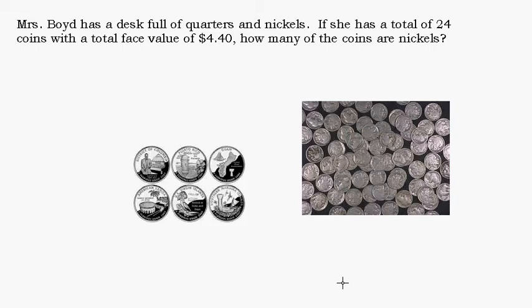Before we jump into this too far, I really want to make a distinction between the number of coins and the total face value of those coins. So let's look at an example down here. I've got some quarters. The number of quarters I have in this case, the number of coins is six. What is the face value of those coins?